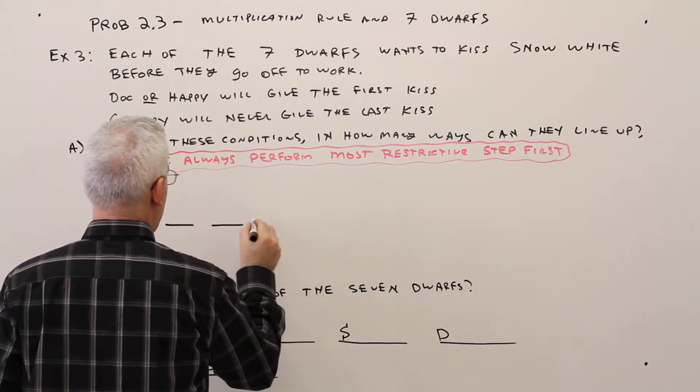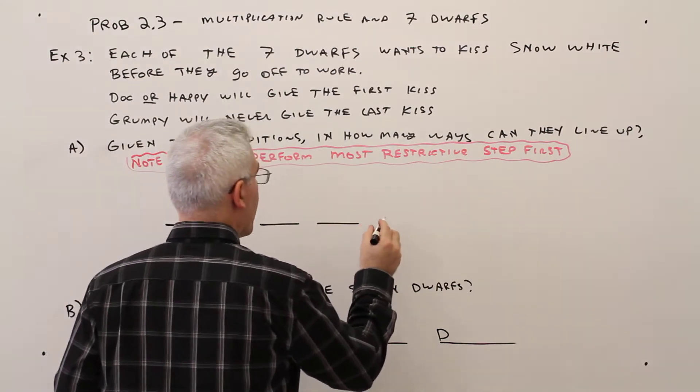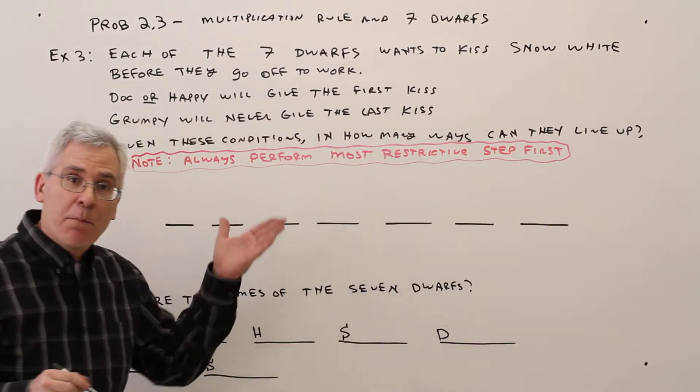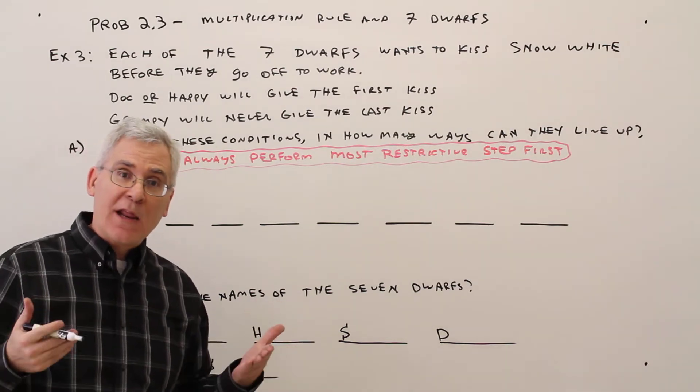One, two, three, four, five, six, seven. And then, below each slot, I'm going to put in any constraints.